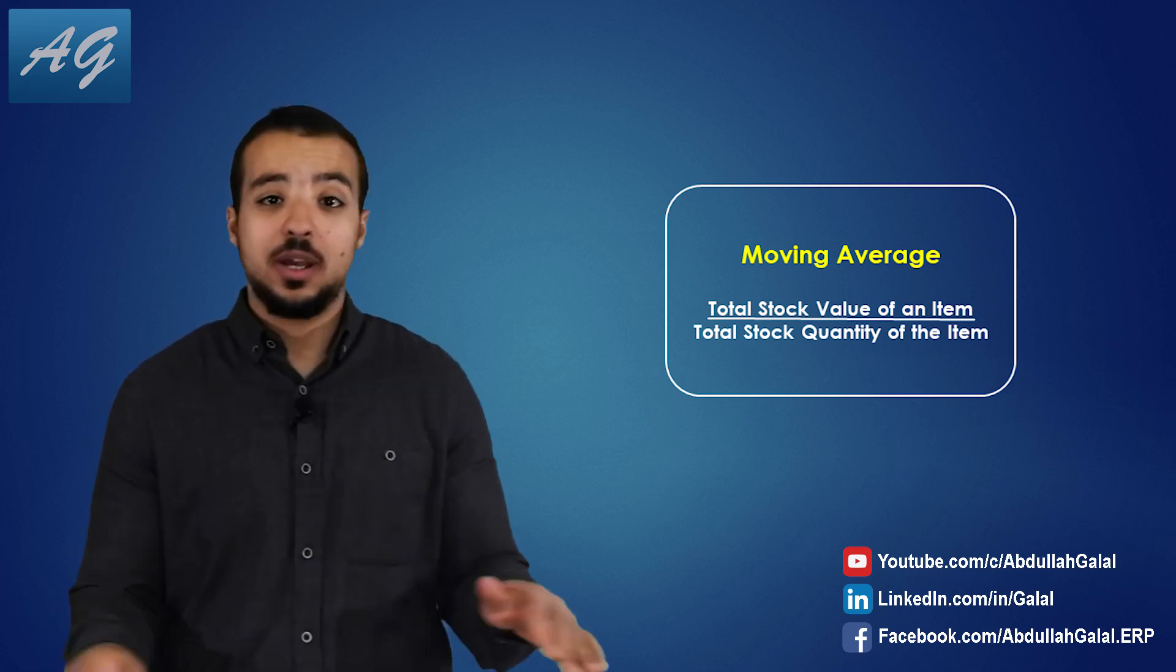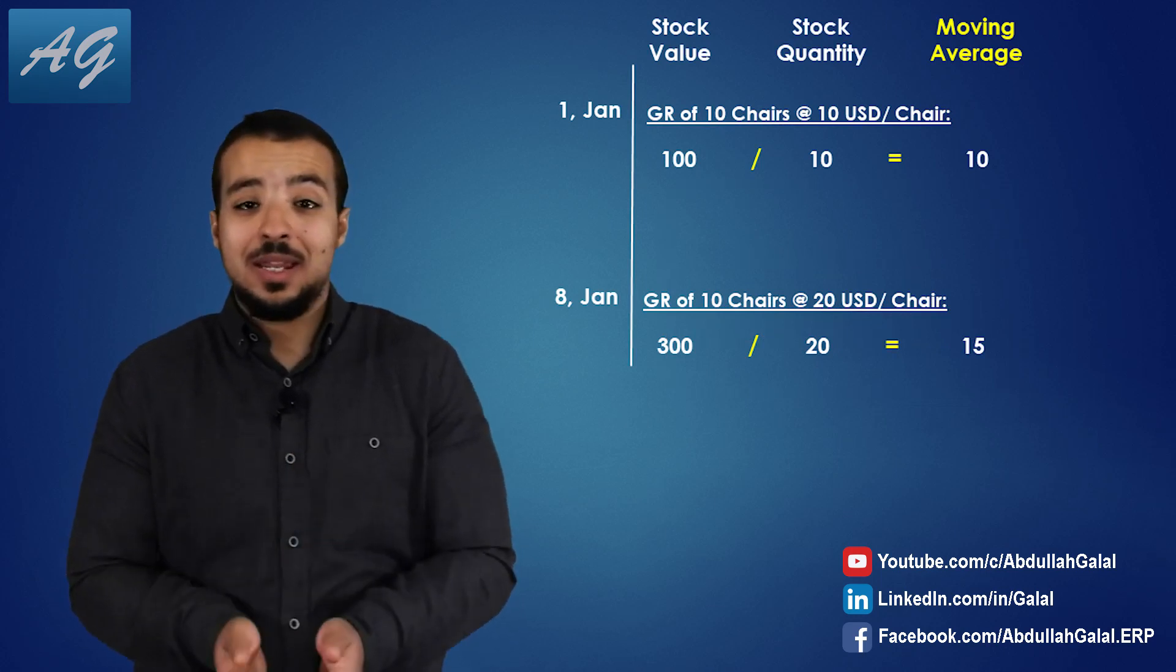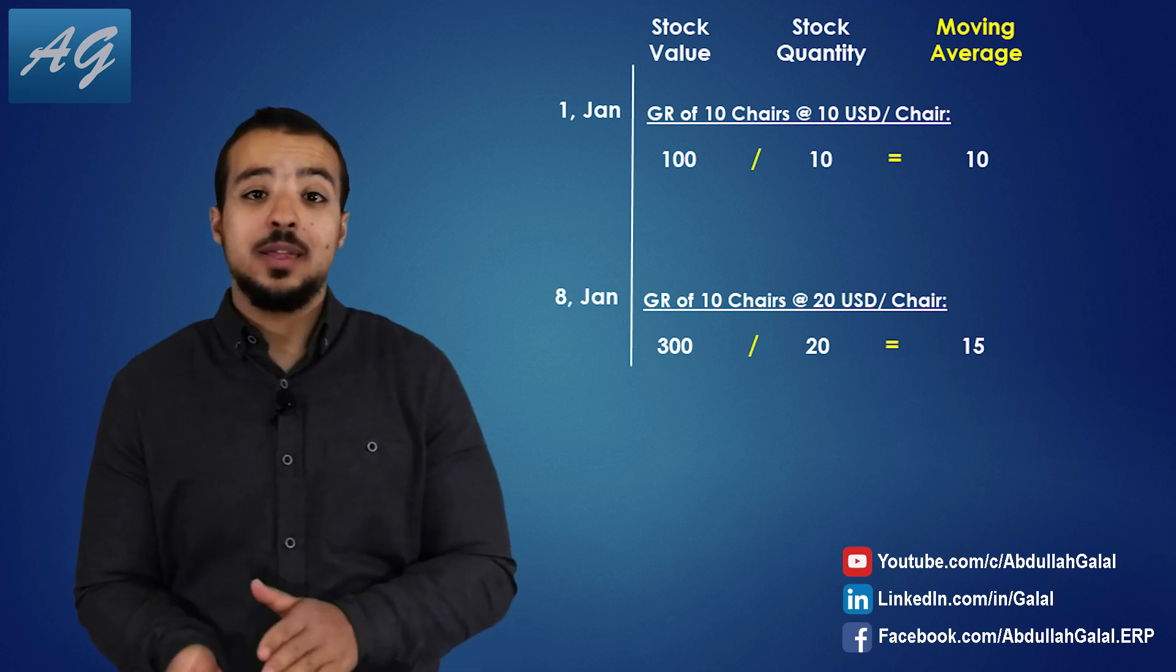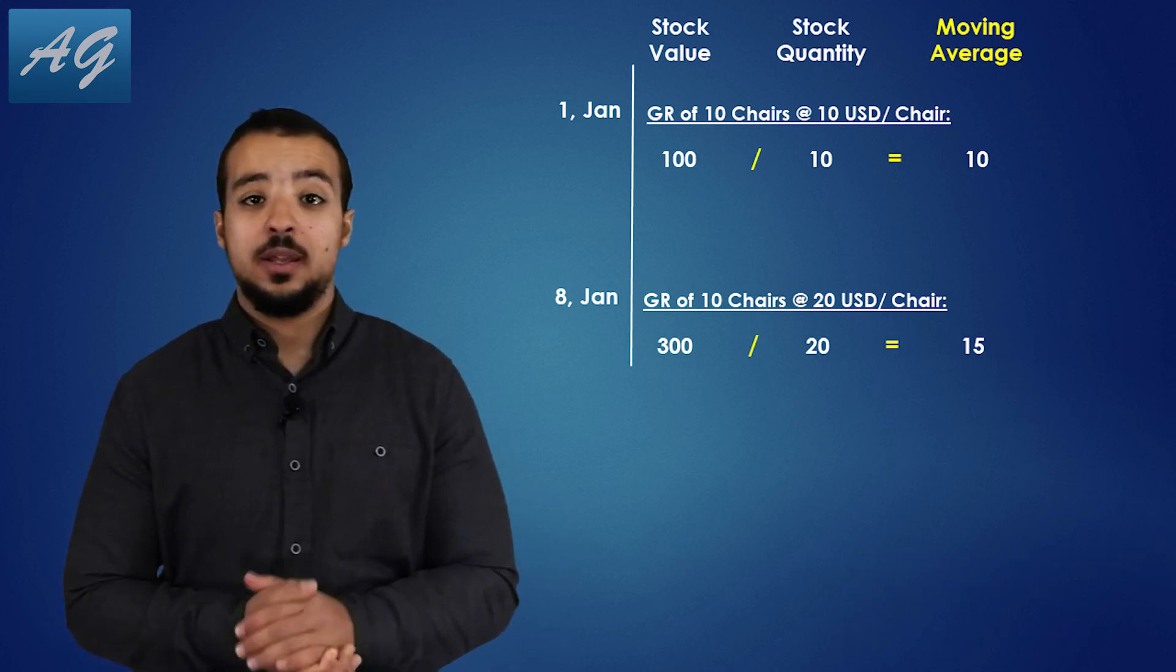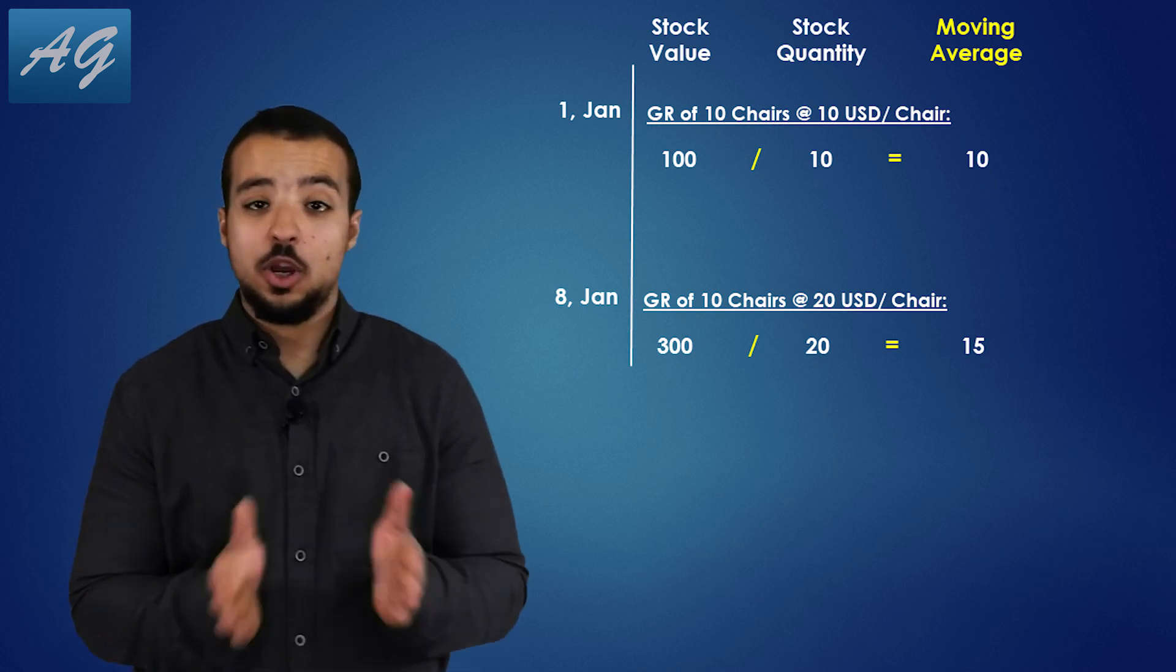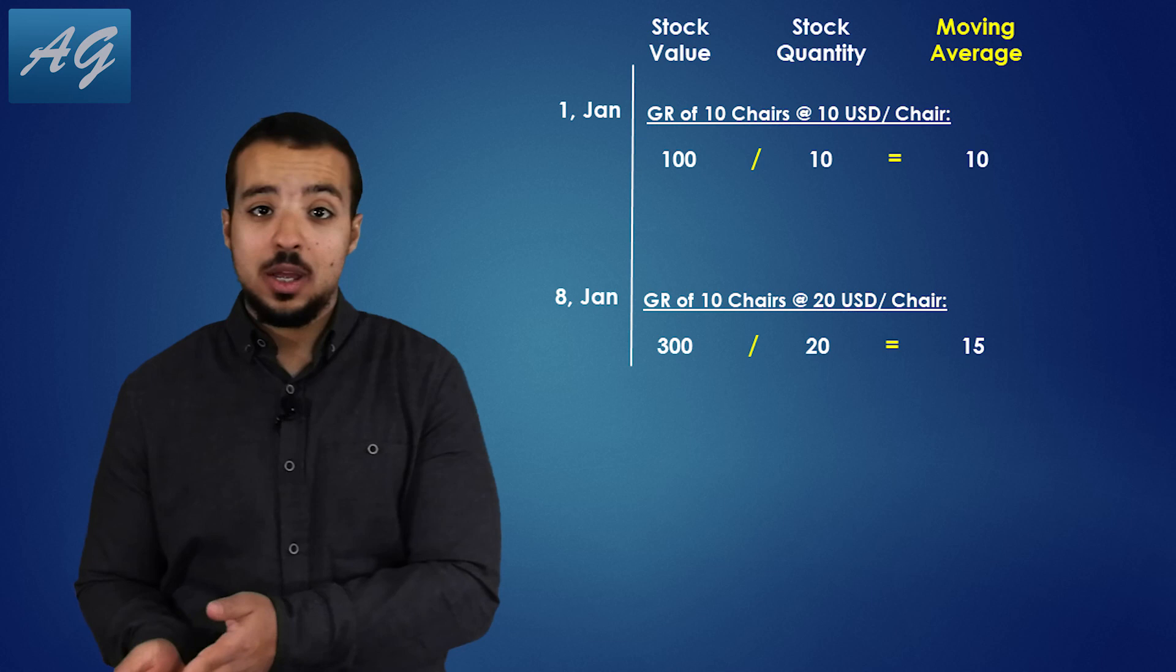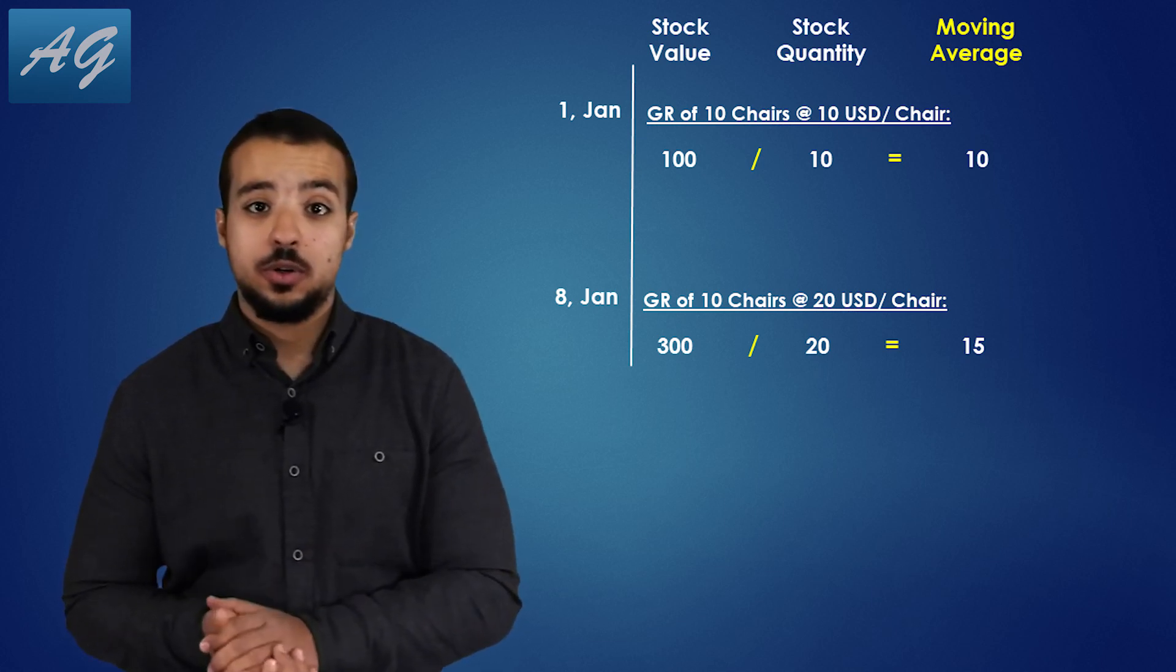And this is going to be the same for all the units I have. So for example, if today I'm going to buy 10 shares for 10 USD each, and next week I'm going to buy the same 10 shares but for 20 USD each, then the total stock value is going to be 300 USD, the total stock quantity is going to be 20 shares, and the moving average cost is going to be 15 USD per share.